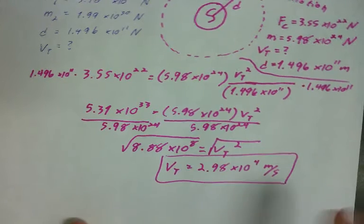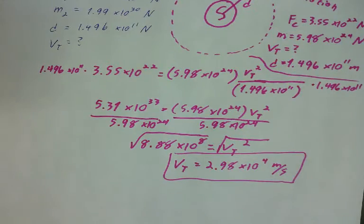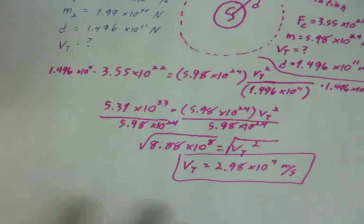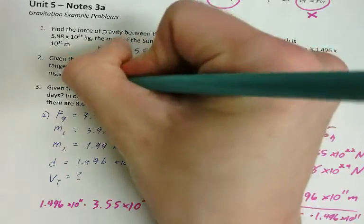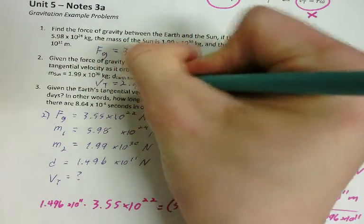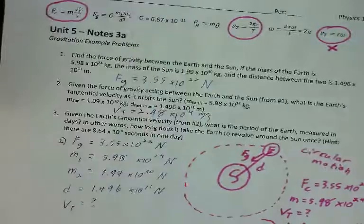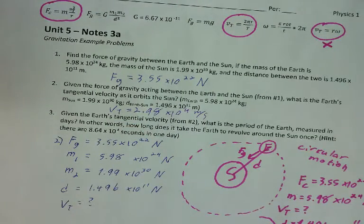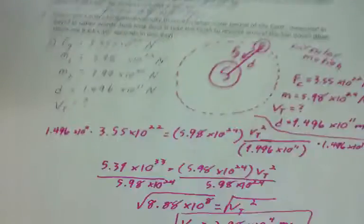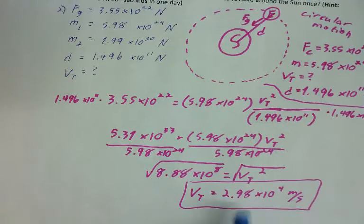And if you don't write it in scientific notation, that's fine. If you're having trouble with the math, I'll be happy to look at it with you, but I want to get through the concept first. So there's my answer to number 2. VT equals 2.98 times 10 to the 4th. Last one, number 3. Given the Earth's tangential velocity from number 2, what is the period of the Earth measured in days? In other words, how long does it take the Earth to revolve around the Sun once? And I gave you a hint. There are 8.64 times 10 to the 4th seconds in one day.